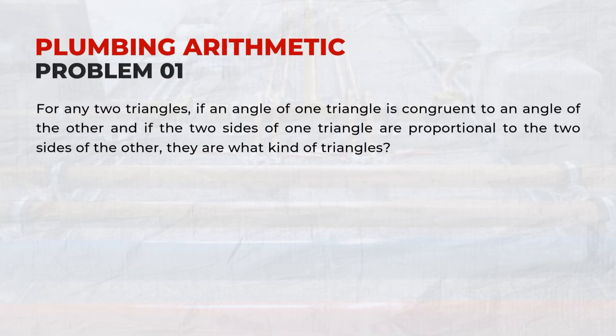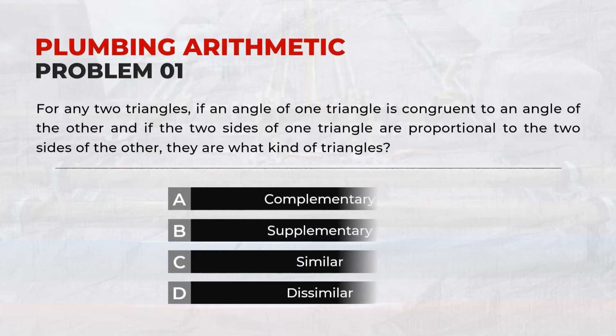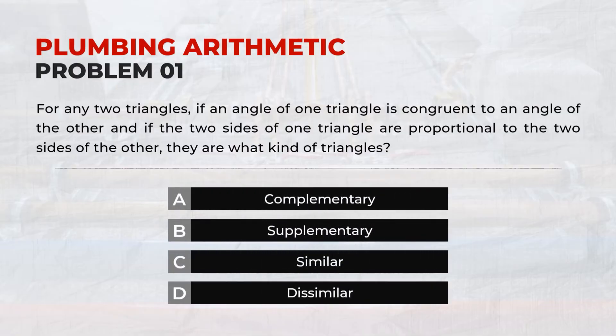For any two triangles, if an angle of one triangle is congruent to an angle of the other, and if the two sides of one triangle are proportional to the two sides of the other, they are what kind of triangles? C. Similar.